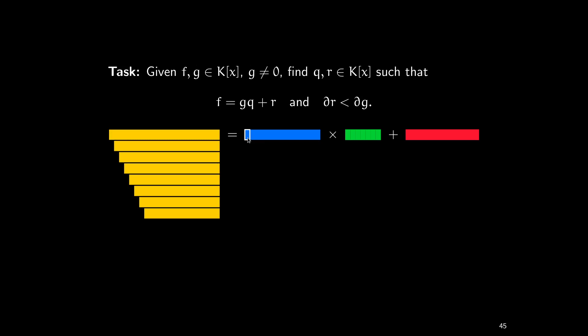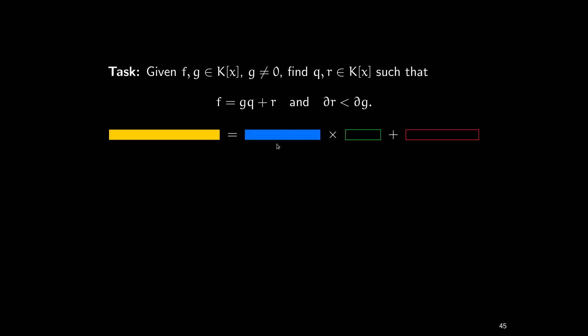The idea for doing this faster is that instead of proceeding coefficient by coefficient, we use an idea that was already successful in Karatsuba's algorithm: we divide g in the middle. Instead of dividing f by just the leading coefficient of g, we divide f by the entire first half of g. By doing so, we get the first half of the quotient in one stroke.